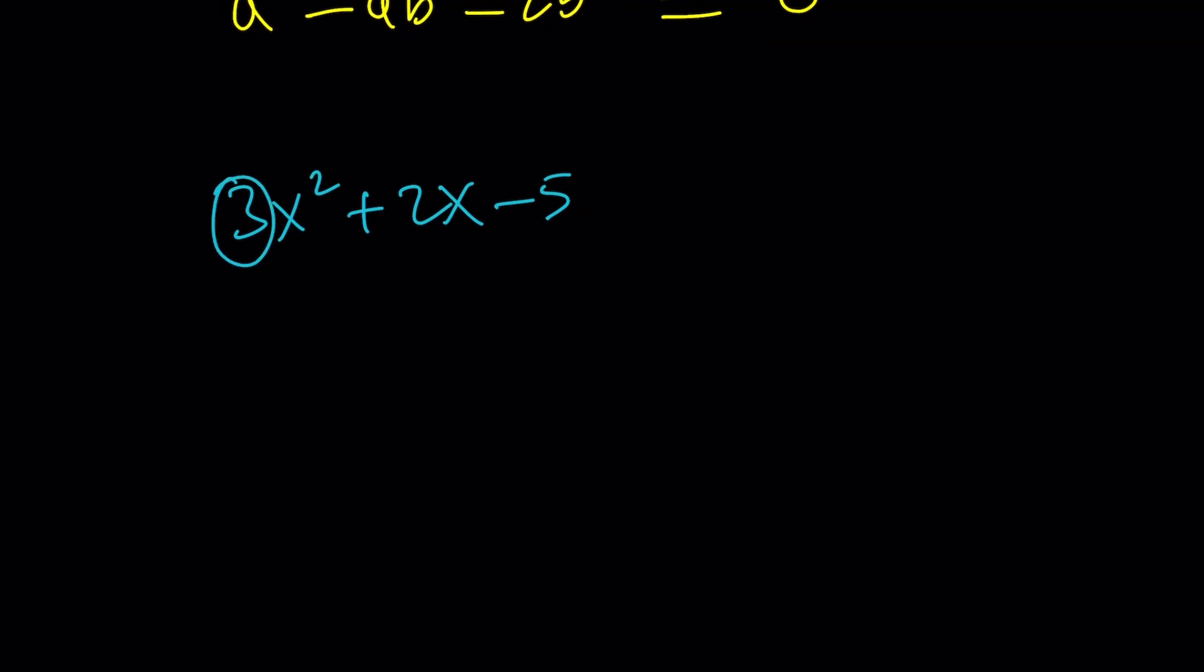You multiply these two numbers, giving negative 15, and then the sum is 2. The top number is a product and this is a sum. We look for two numbers whose product is negative 15 and whose sum is 2. Those numbers are 5 and negative 3.